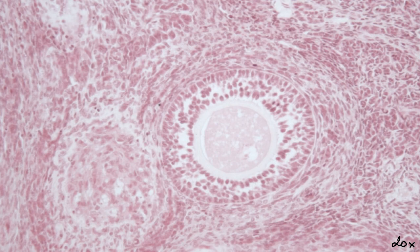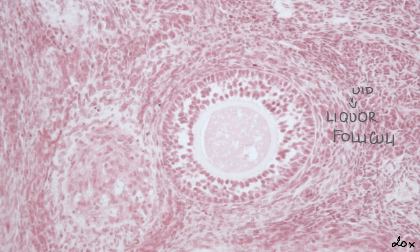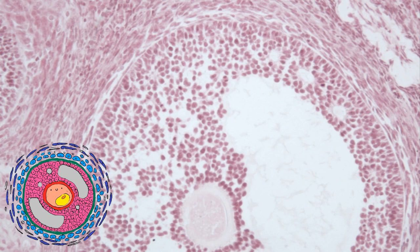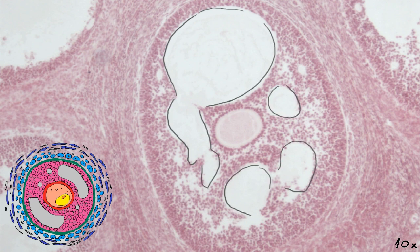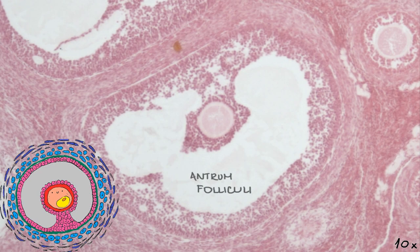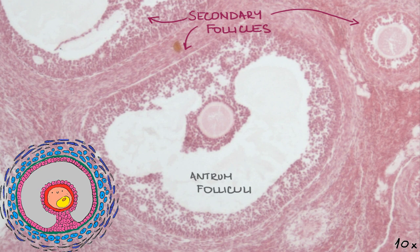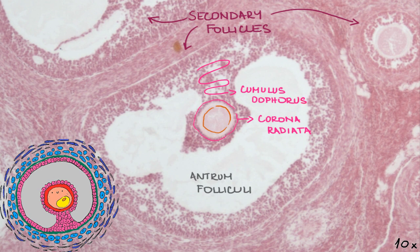Liquid moves out of the blood vessels and accumulates between follicular cells, which secrete their products into it. This liquid is called follicular fluid, or liquor folliculi. It is located within small cavities, which then gradually coalesce and in the end form one big cavity called the antrum. Follicles with cavities between granulosa cells are called antral or secondary follicles. Follicular cells immediately around and linked to the oocyte make up the corona radiata, and other cells further from the oocyte form a small hillock — the cumulus oophorus — surrounding the oocyte and protruding into the antrum, while fixing it to the wall of the follicle.